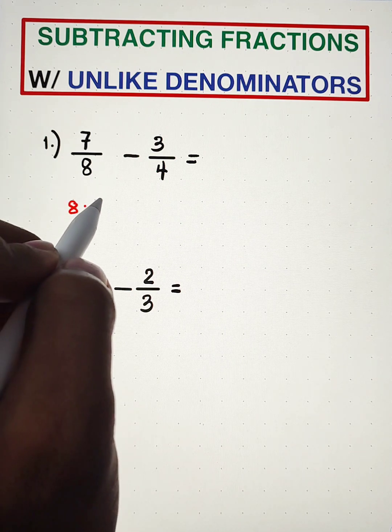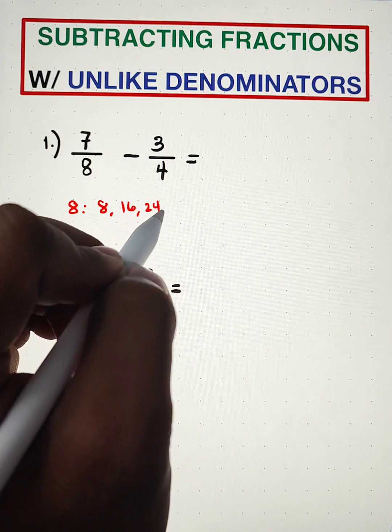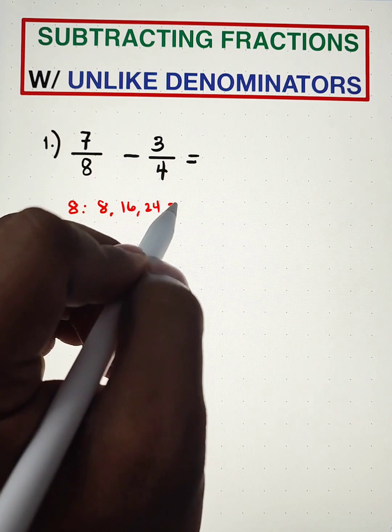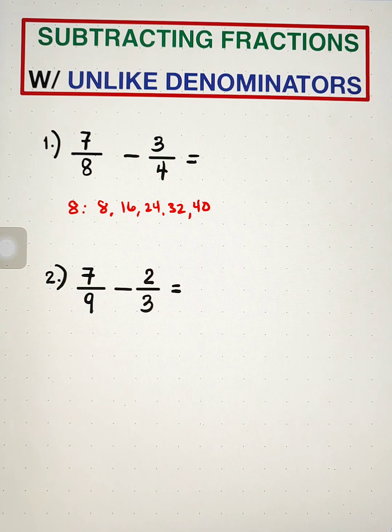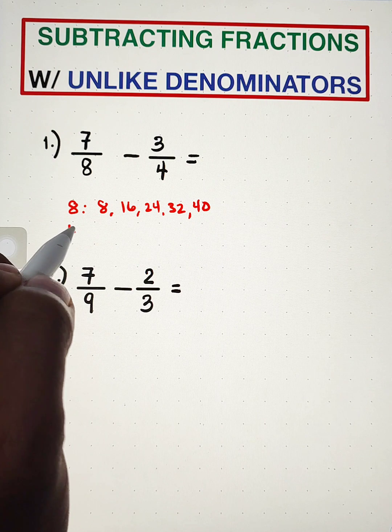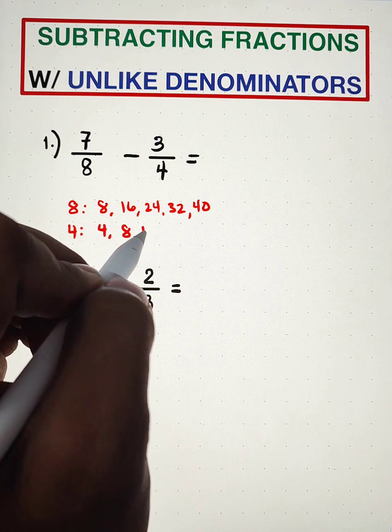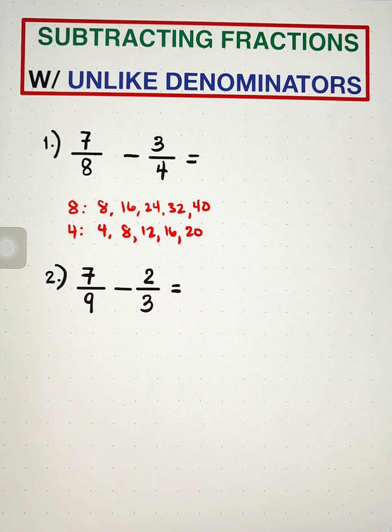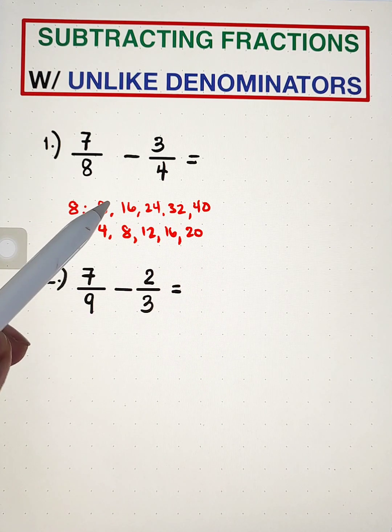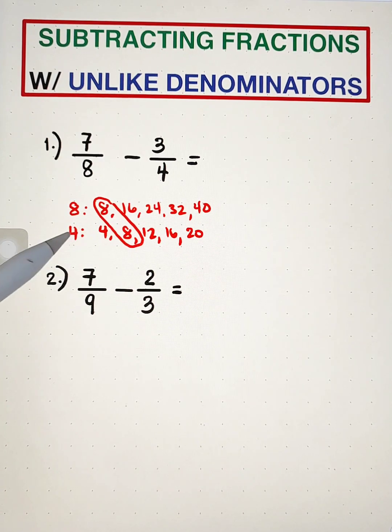The multiples of 8 are 8, 16, 24, 32, 40, and so on. We'll find 5 multiples. Next for the 4, we have 4, 8, 12, 16, and 20. And as you can see, our multiples or our least common multiple, or LCM, is 8.